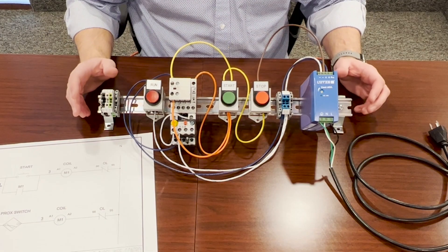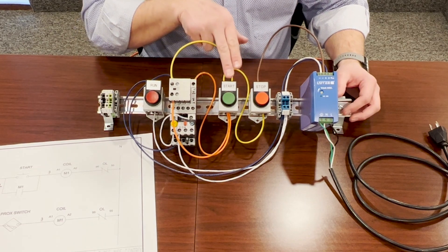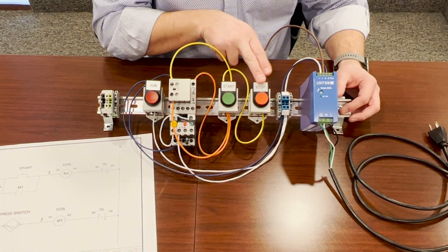So for three-wire control, our on-off switch is gone. We're using a start button and a stop button.